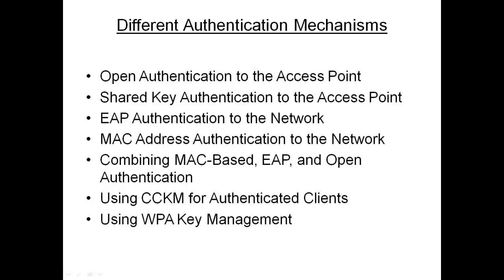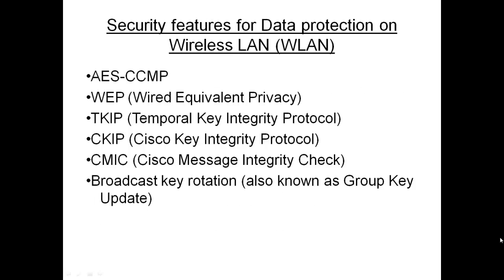We can also use different encryption mechanisms supported on the access points. Some of the security features that protect data traffic on the wireless LAN are AES CCMP — which can only be enabled on the 802.11G radio — Temporal Key Integrity Protocol, Cisco Key Integrity Protocol, Cisco Message Integrity Check, and Broadcast Key Rotation, also known as Group Key Update.